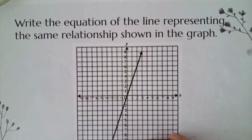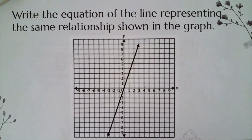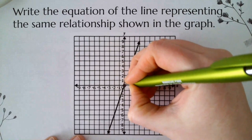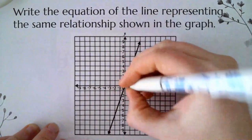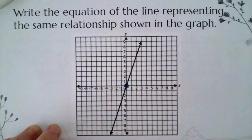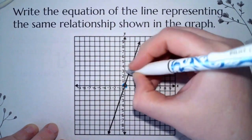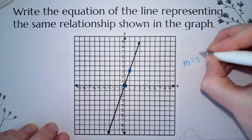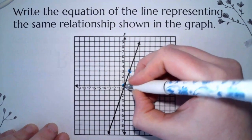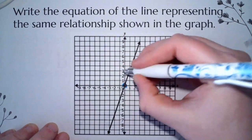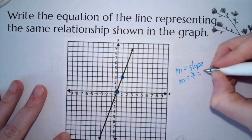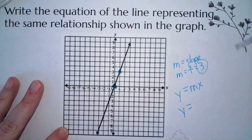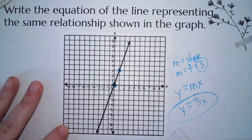Write the equation of the line representing the same relationship shown on the graph. We need to pick two points — let's use the origin and another point. First, we find m, the slope. We went up 1, 2, 3 — so the numerator is 3 — and over 1. So m equals 3 over 1, which is 3. Using y equals mx, our answer is y equals 3x.